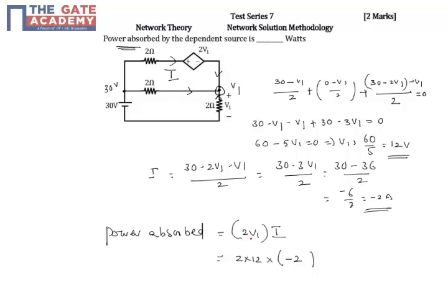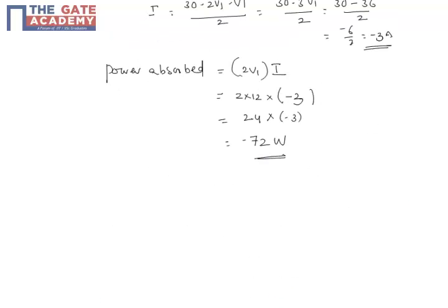So 24 into minus 3, so minus 72 watts. That means actually it is supplying a power of 72 watts.